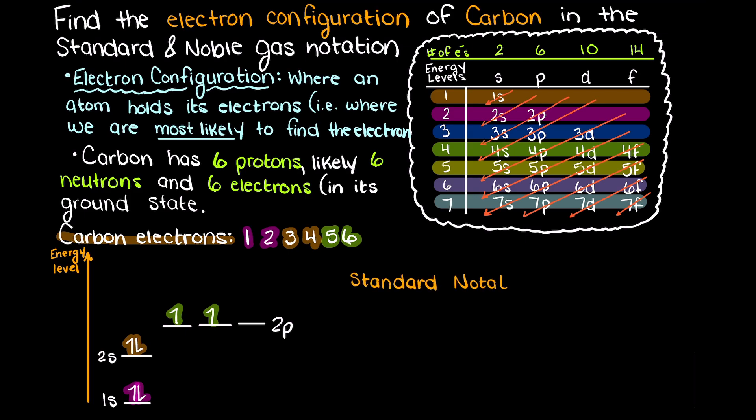There we go, we can rewrite this solution like this and we have solved for the standard electron configuration of carbon in its ground state.